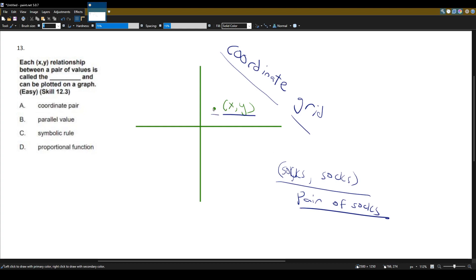Because you can't have a coordinate point without the x and the y. You need both of them. You need the pair. So, that's going to correlate to answer choice A, a coordinate pair.